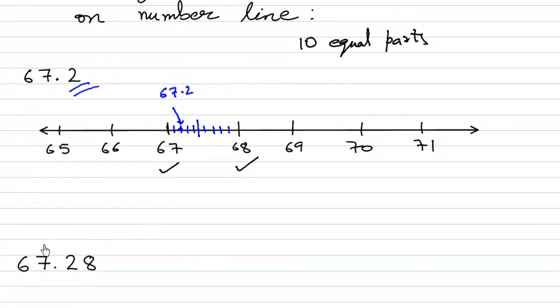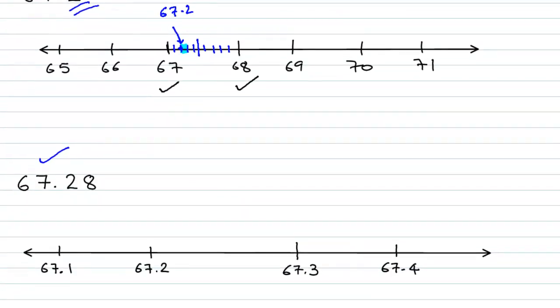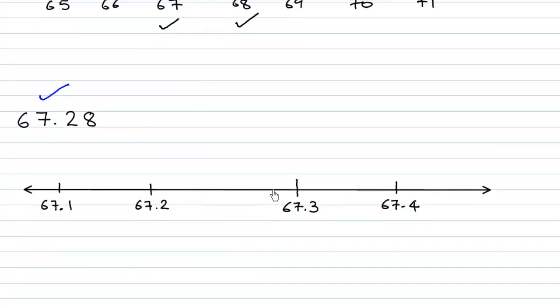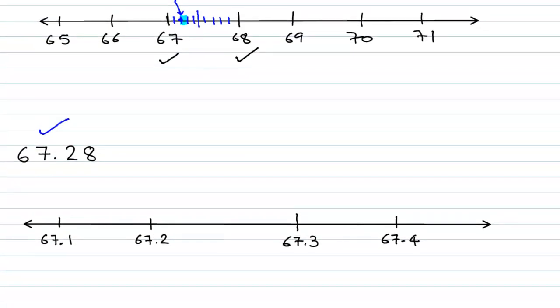So we are going to zoom inside and this particular division, that is 67.2 and 67.3, we're going to zoom this particular division and then divide that particular line segment in 10 equal parts. So this is something like this, so we're going to zoom in. So this is that same blue segment that you saw above and we are going to divide this also in 10 equal parts.